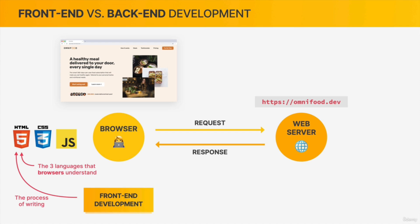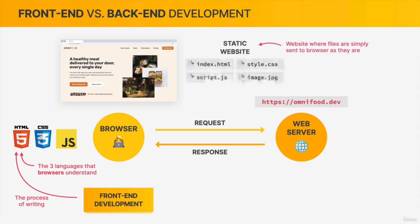As a side note, whenever the files that make up the website are simply stored on the web server and sent to the browser as they are, we say that we have a static website. A static website is basically one where the files are simply sent from the server to the browser as they are — without any transformations. From this you can see what front end development is, and about the three core technologies that make up any website.